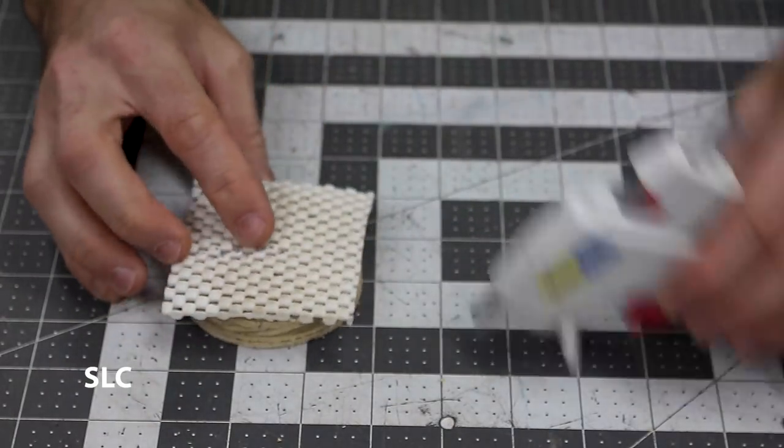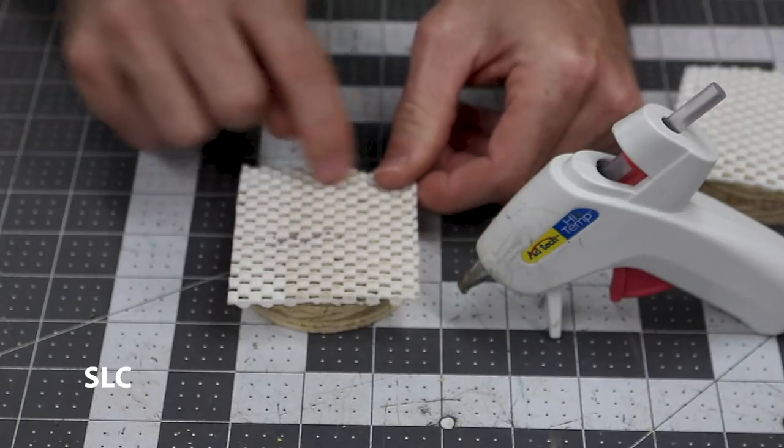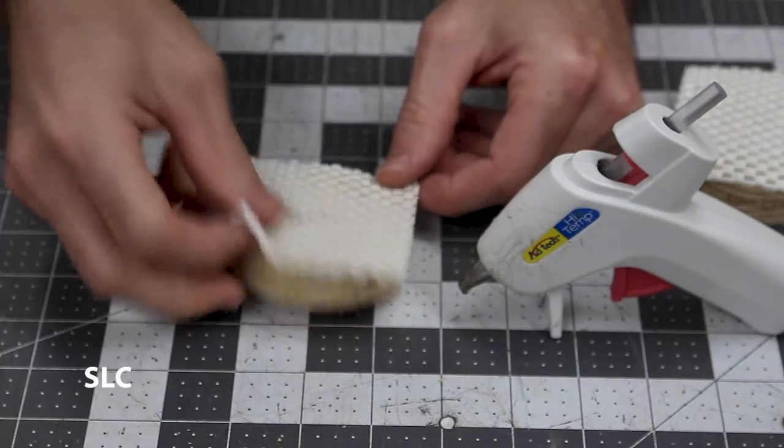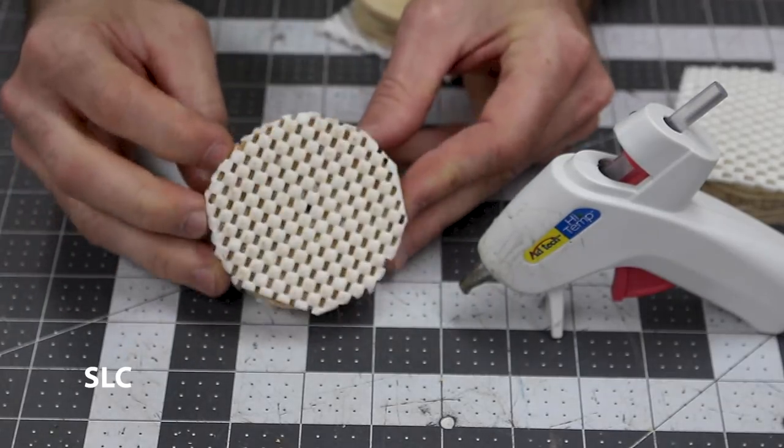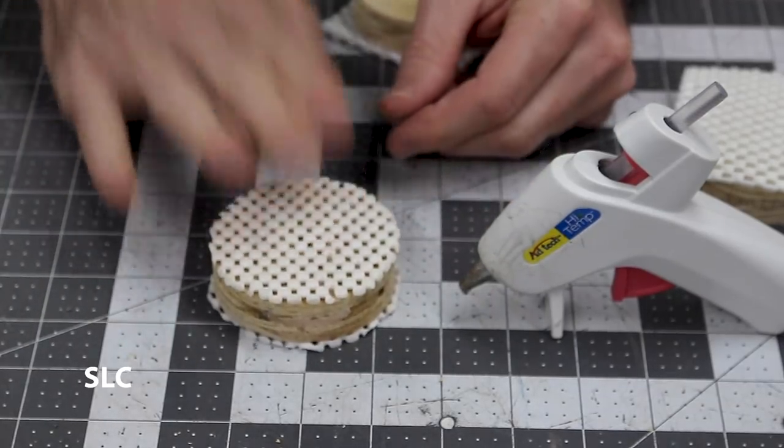Once you have that done, get you a hot glue gun and you want to put a little bit of glue down and attach these to the top. Give that a moment to dry and you can do the other side. Once everything has dried, you can take some scissors and cut them out and you have a real quick and easy bench cookie.